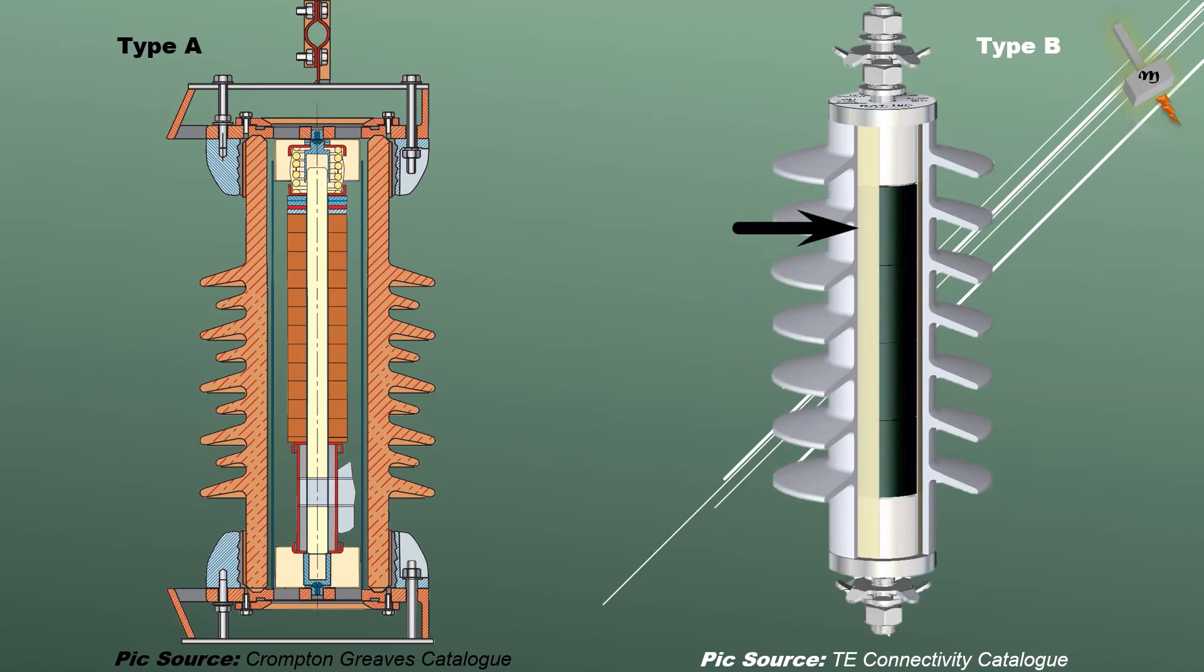So, to put it in simple manner, the type A designs are porcelain lightning arrester and hollow core composite lightning arrester. And, the type B designs are mostly direct molded composite lightning arrester.